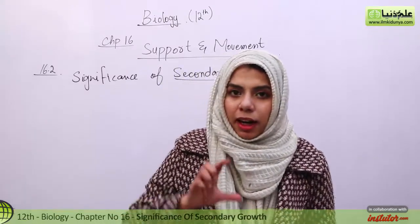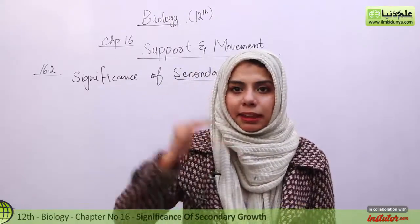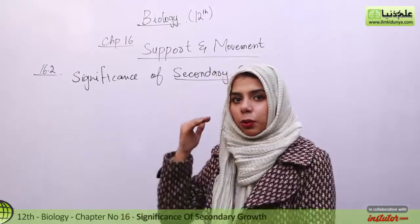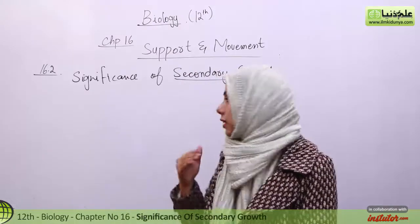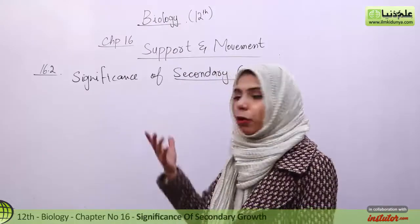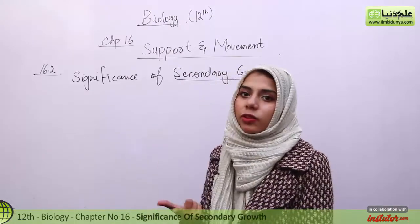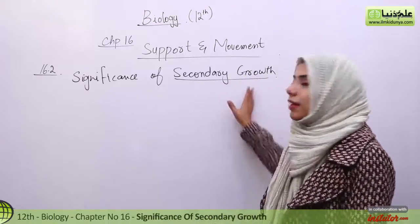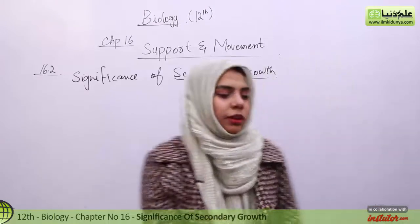First of all, a plant increases in its length. When its shoots, its branches, its stem elongate, that is known as Primary Growth. So what is secondary growth?